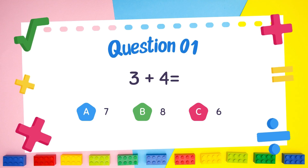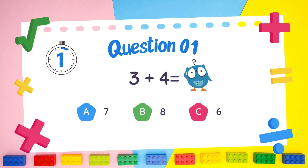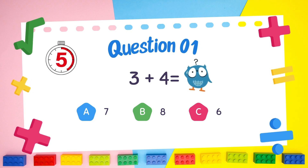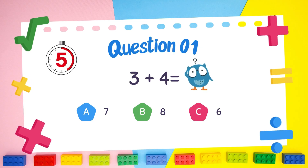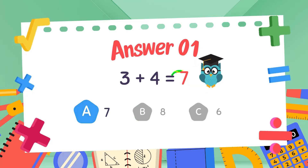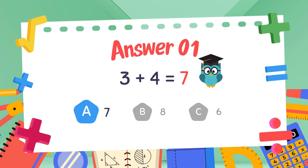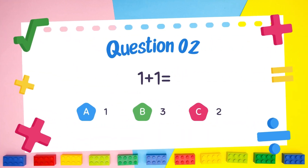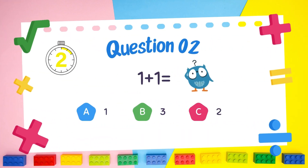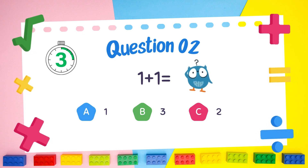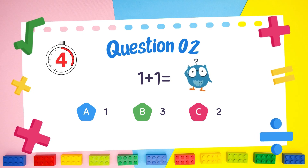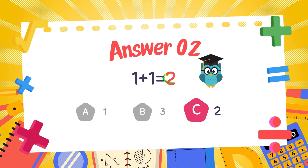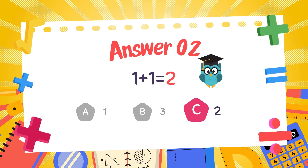What is 3 plus 4? The answer is 7. What is 1 plus 1? The answer is 2.